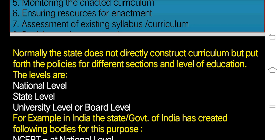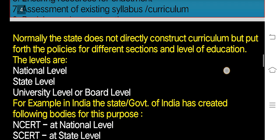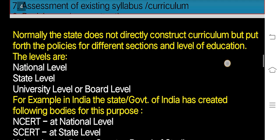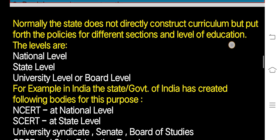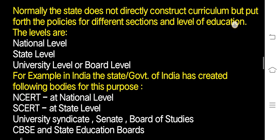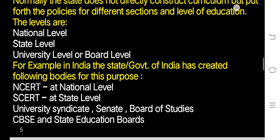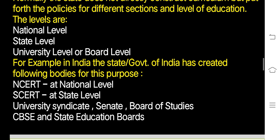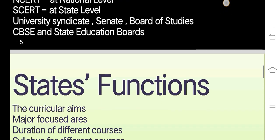The levels are national level, state level, and university level or board level. For example, in India, the state government has created the following bodies for this purpose: NCERT at national level, SCERT at state level, university syndicate, senate, board of studies, CBSE and state education boards.